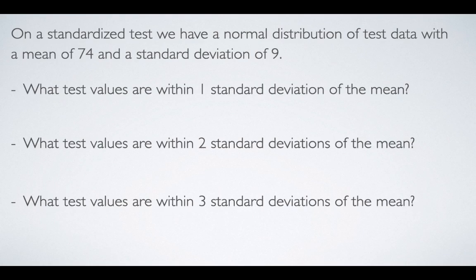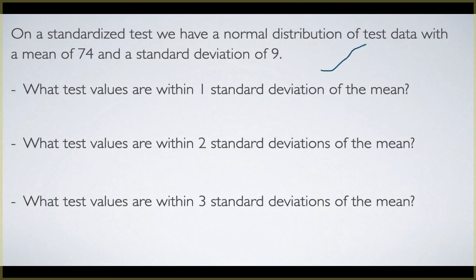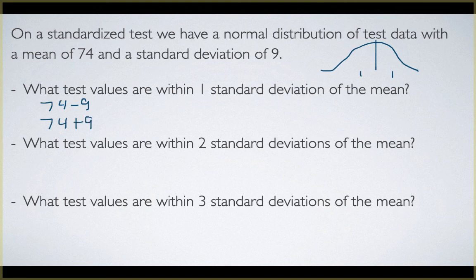On a standardized test, we have a normal distribution of test data with a mean of 74 and a standard deviation of 9. What test values are within one standard deviation? We subtract 9 from 74 and add 9 to 74. That gives us 65 and 83. So the scores from 65 to 83 are within one standard deviation.